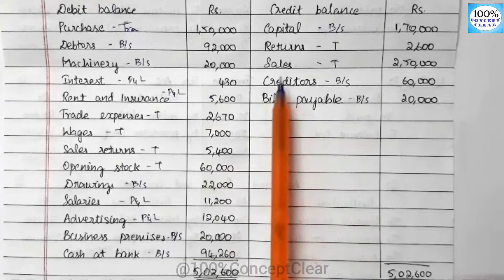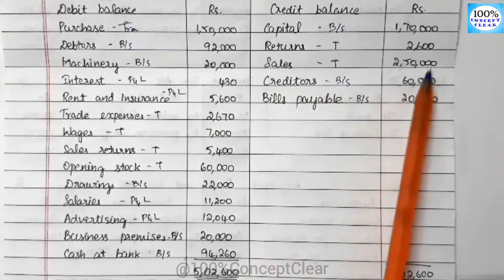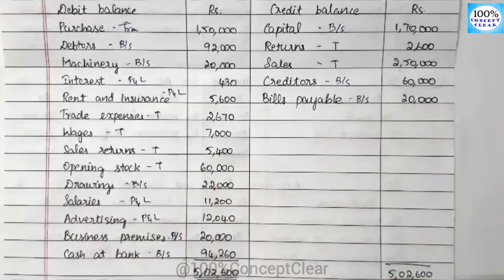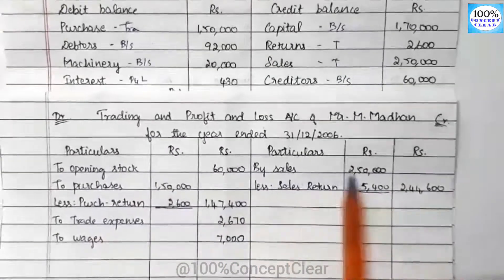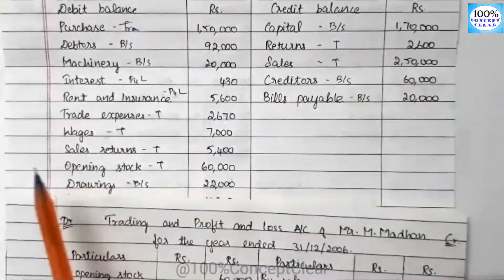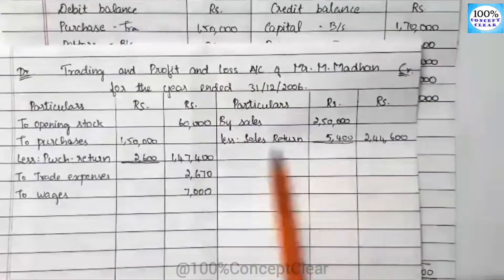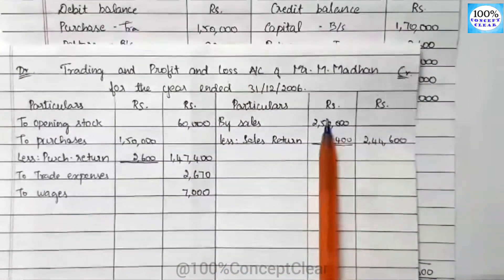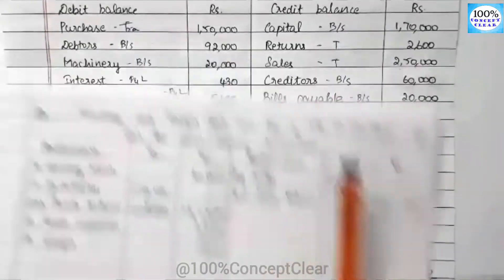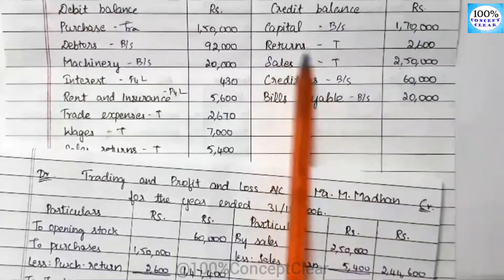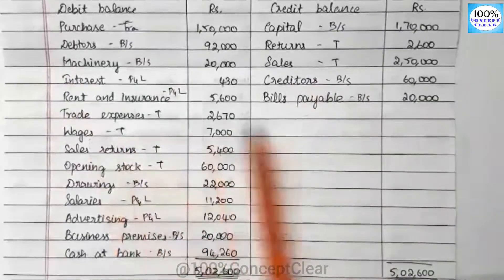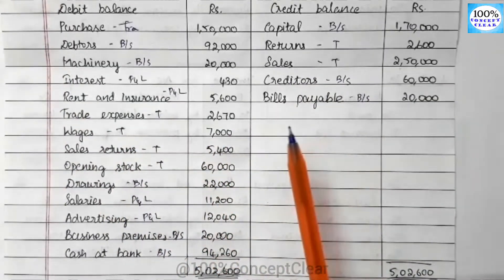What is the credit side? First, we have sales: $2,50,000. And here we have sales return $5,400. Sales $2,50,000 less sales return $5,400 gives us $2,44,600. We will minus the purchase return from debit side. If we get all the trade balance items, then we will get the total.